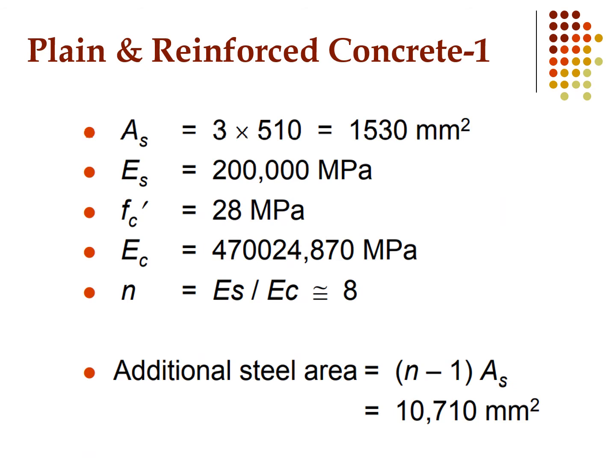First, we need to calculate the area of steel. The area of one No. 25 bar is 510 mm². We have three bars, so we multiply 510 by 3 to get a total steel area of 1530 mm² at the bottom.